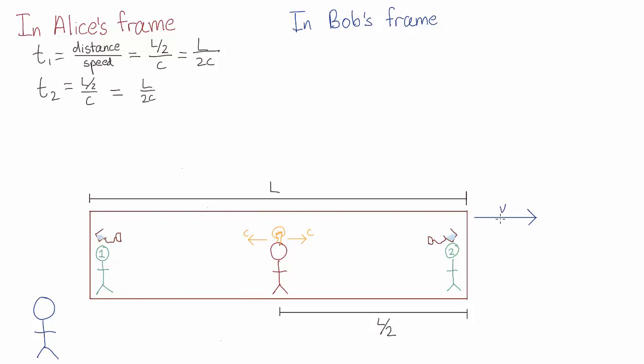Now I'm going to make a crazy assumption. I'm going to say maybe, just maybe, Bob measures a different length for the train, which we'll call lb.